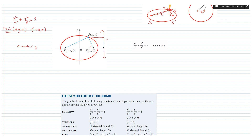Eccentricity is fundamentally the ratio of the distance of any point on the ellipse from a focus (PF₂) to its distance from the directrix (PM). This ratio PF₂/PM is constant and is called eccentricity, represented by e. The value of eccentricity is defined as the square root of 1 minus b²/a².